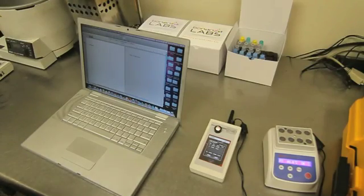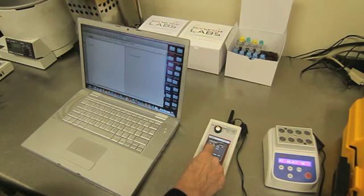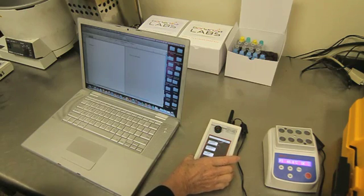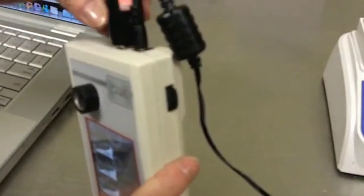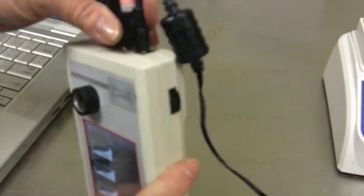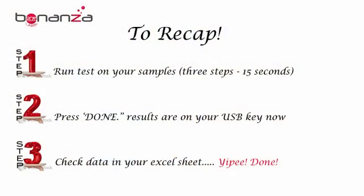I simply hit the done button. This transfers all the data onto the flash drive. When that data transfer is complete, I remove the flash drive from the mini scan unit and insert it into the computer to download into the Excel spreadsheet.